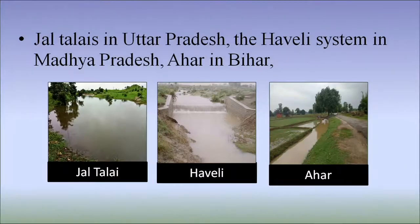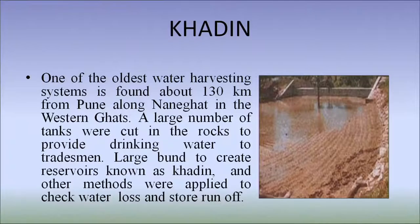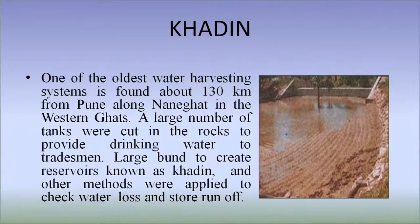Jai Taliyas in Uttar Pradesh, Hebeli system in Madhya Pradesh, and Ahar in Bihar are also methods of storing rainwater. One of the oldest water harvesting systems is found about 130 km from Pune along Naneghat in the Western Ghats. A large number of tanks were cut in the rocks to provide drinking water to tradesmen. Large bunds to create reservoirs known as Khadin and other methods were applied to check water loss and store runoff.